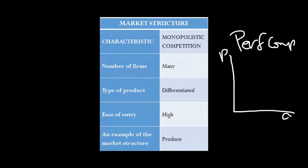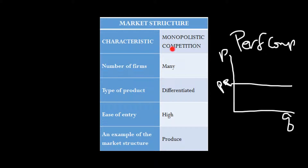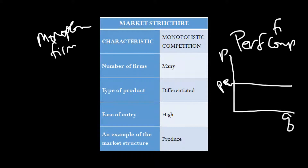In perfect competition, from the firm's point of view, if they were to raise their price they would sell nothing. They could sell as much as they wanted at the market price, but as soon as they raised their price their quantity fell to zero — because consumers saw their product as identical. I would not pay more for something I see as identical. But what if I see it as differentiated? Even though this is the only characteristic that differs for monopolistic competition from perfect competition, it will make all the difference.